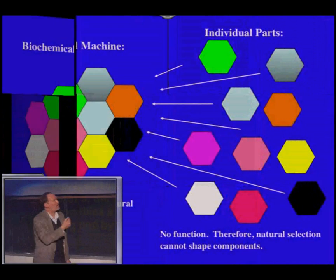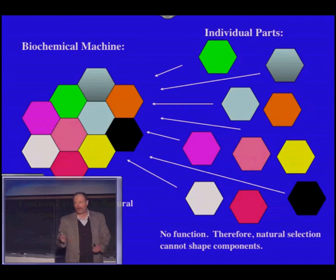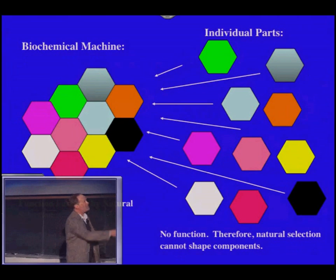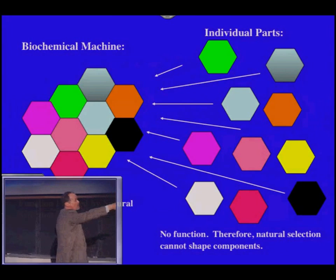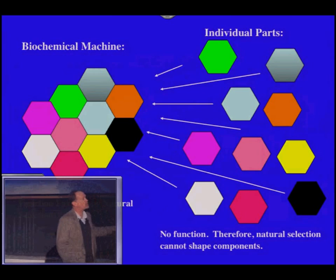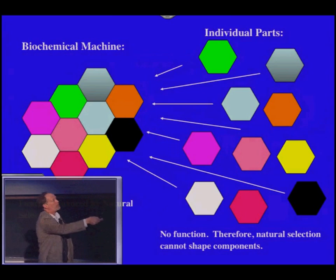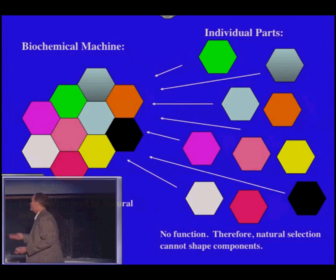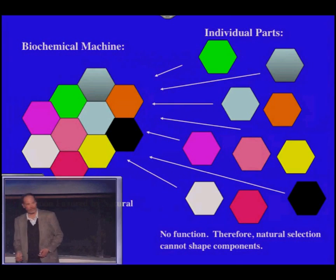Now, here is the essence of the argument. I want to make this very clear because it's a critical point. The fully assembled machine has a function and therefore can be favored by natural selection. But the individual parts of the machine — the individual proteins that make it up — have no function. Therefore, natural selection cannot shape them, and evolution of that complex structure is impossible.